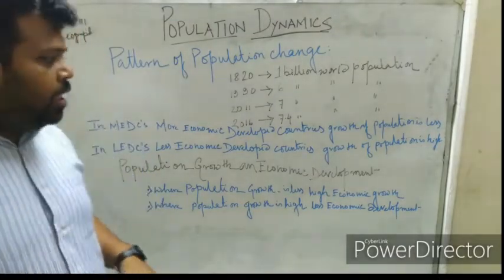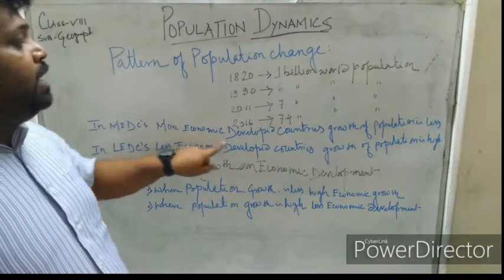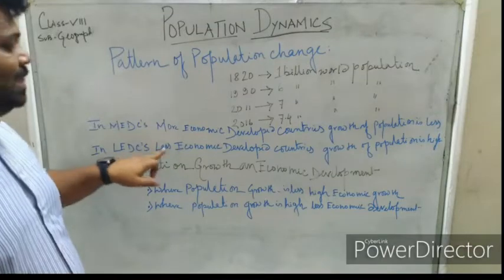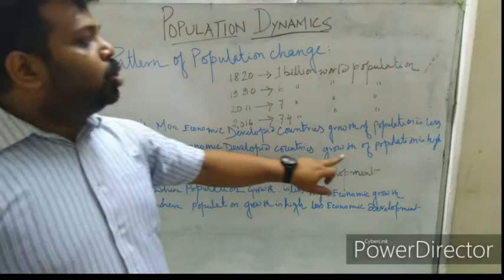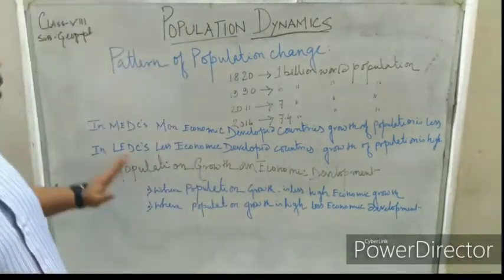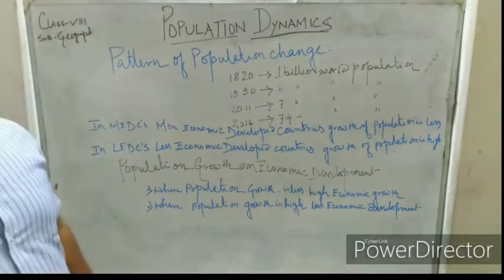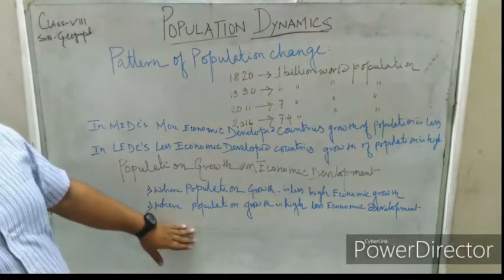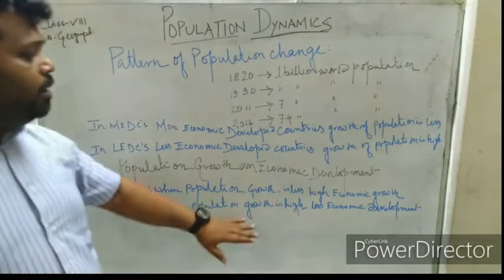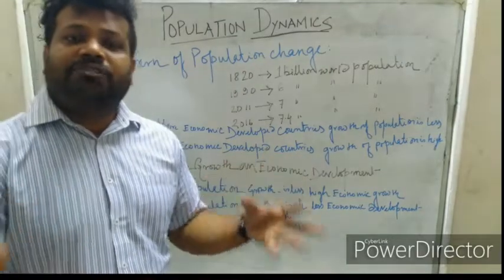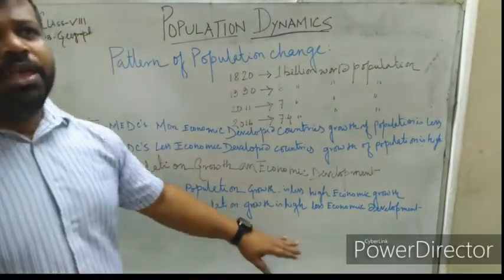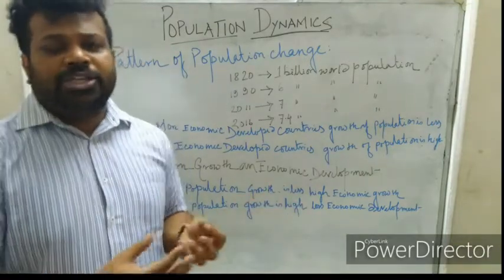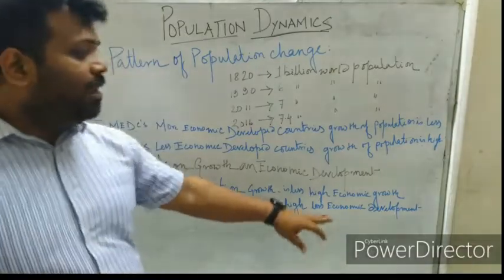In more economically developed countries (MEDCs) like the USA and UK, the growth of population is less. But in less economically developed countries (LEDCs) like India and Bangladesh, the growth of population is high. When population growth is less, economic growth is high. But when population growth is high, economic development is less, because all people do not get proper food and proper education.